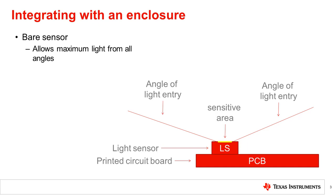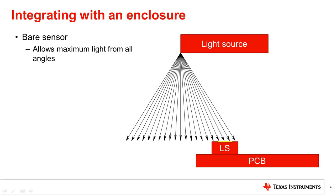In applications that measure light from a wide range of angles, such as display brightness adjustment, the approach for optimal performance is to have a product without a case. This allows the light sensor, abbreviated as Ls in the diagram shown, to be exposed to all incoming light. The yellow region indicates the sensitive area of the light sensor, and the red lines indicate the cone where light is captured by the sensor. To demonstrate how light falls on the sensor, consider a light source, as shown, that you may find in a ceiling light fixture. As the entire surface is an emitter, it can be broken down into many small point sources. We consider the light rays emitted from one of these point sources, as shown.